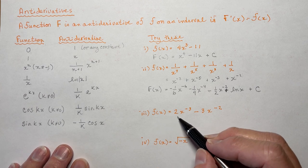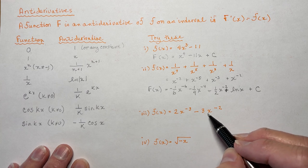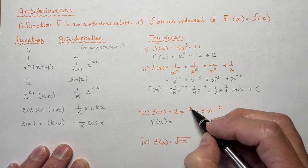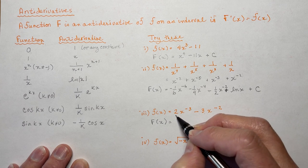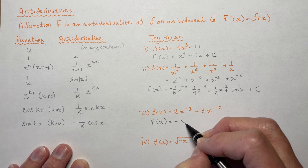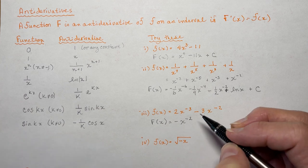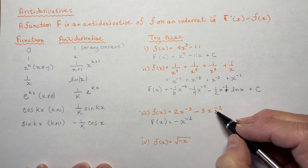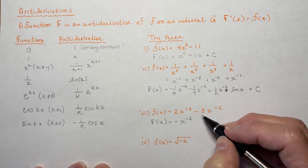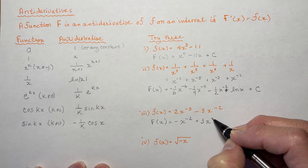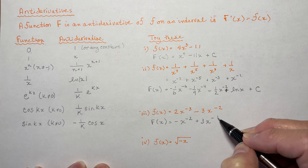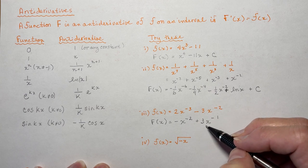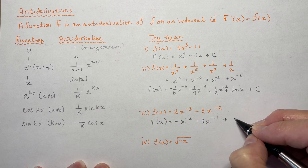Now example 3: f(x) equals 2x to the minus 3 minus 3x to the minus 2. Capital F(x): add one to minus 3, that's minus 2; divide by minus 2 — giving negative x to the minus 2. Double-check: minus 2 times negative one equals positive 2x to the minus 3. ✓ For the second term: add one to minus 2, that's minus 1; divide by minus 1 — that gives 3x to the minus 1. Check: negative 1 times positive 3 gives negative 3x to the minus 2. ✓ And don't forget your plus C.